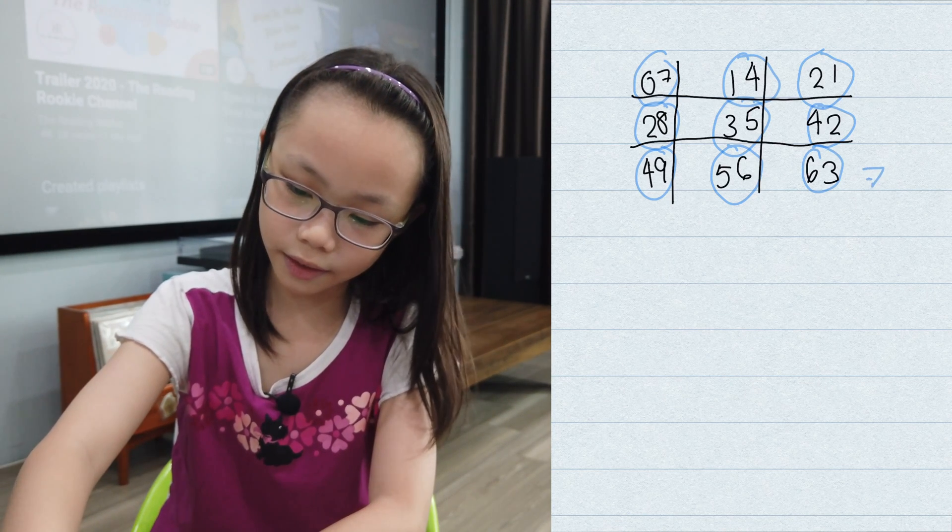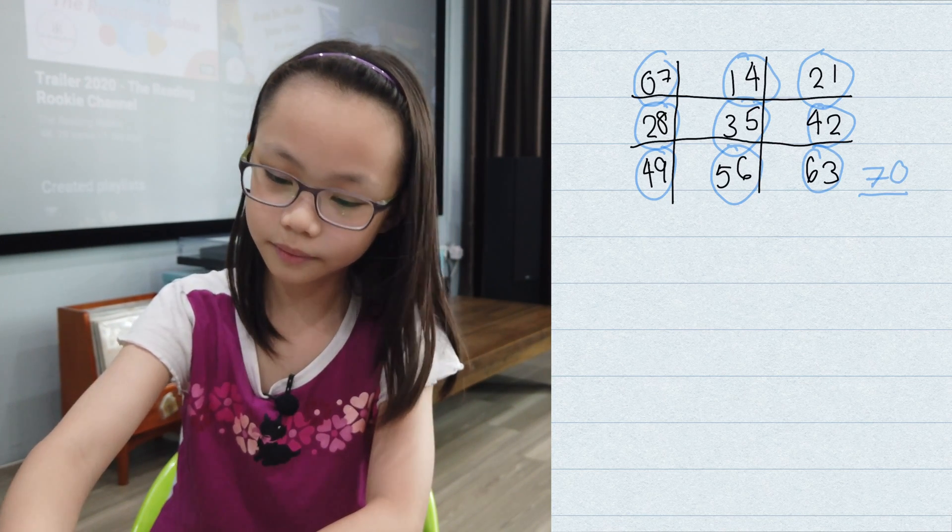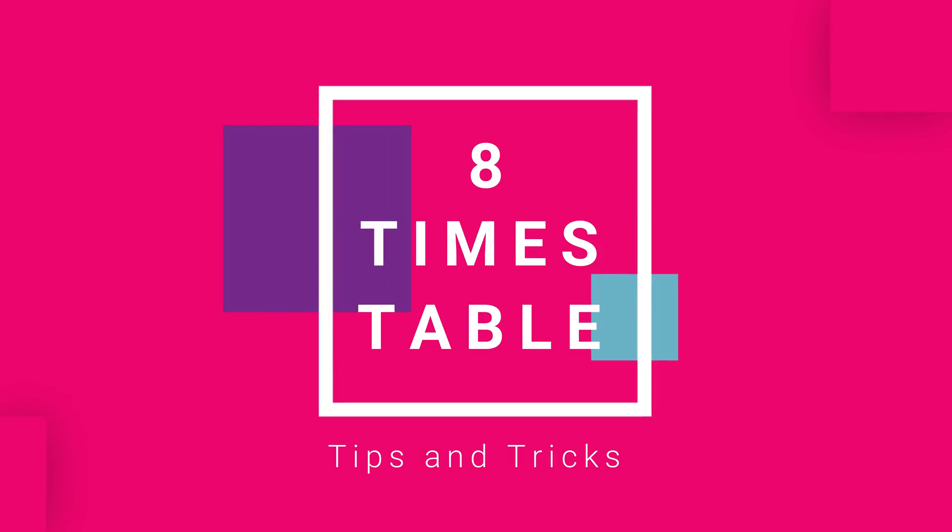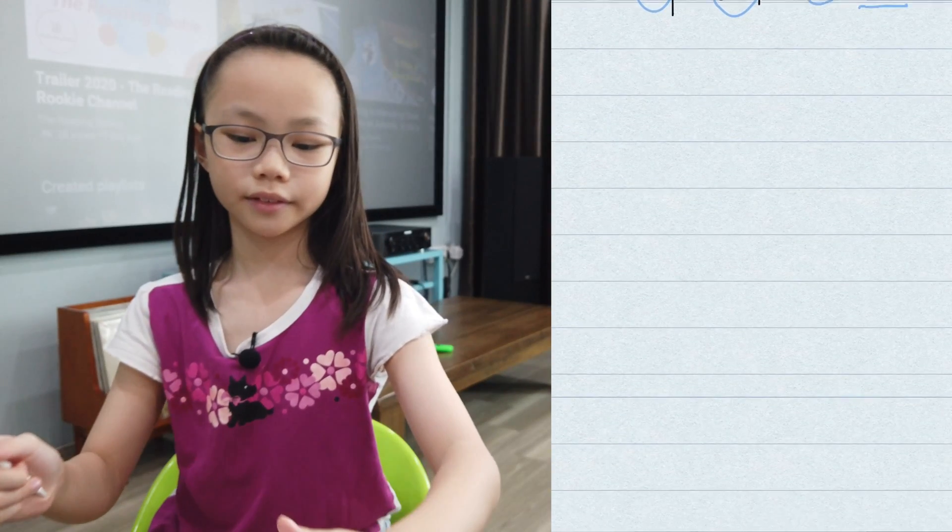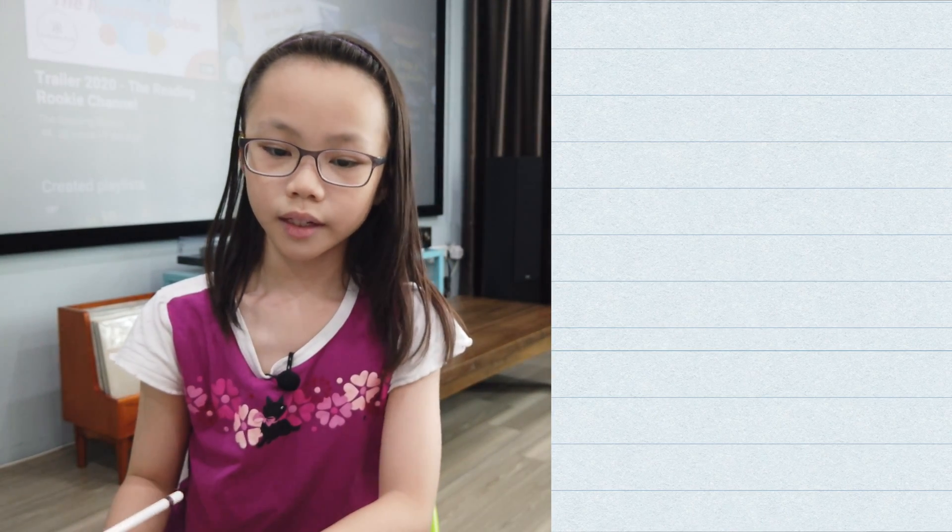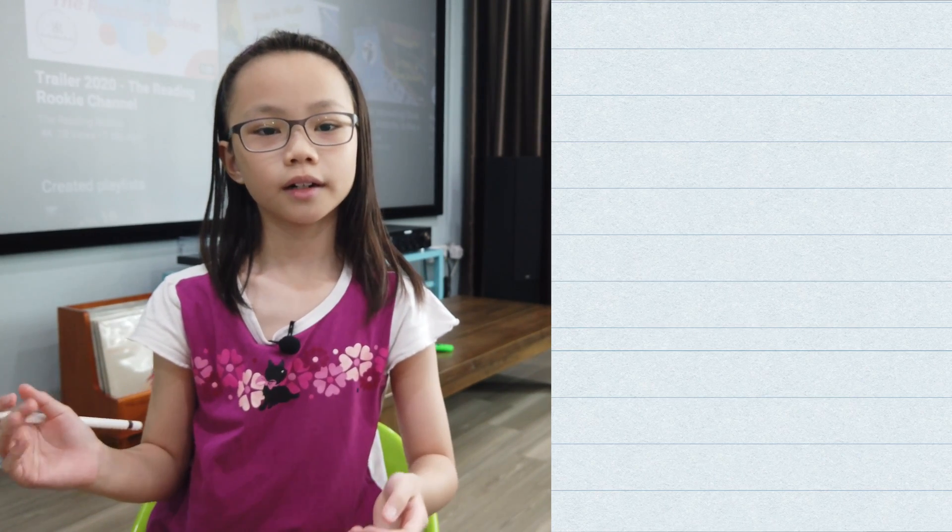Now, all we need to do is add a 70 at the side here. That's the 7 times table trick for you. Now, let's move on to the 8 times table trick. The 8 times table trick is a little bit special. Instead of writing a tic-tac-toe board, we need to just use numbers.